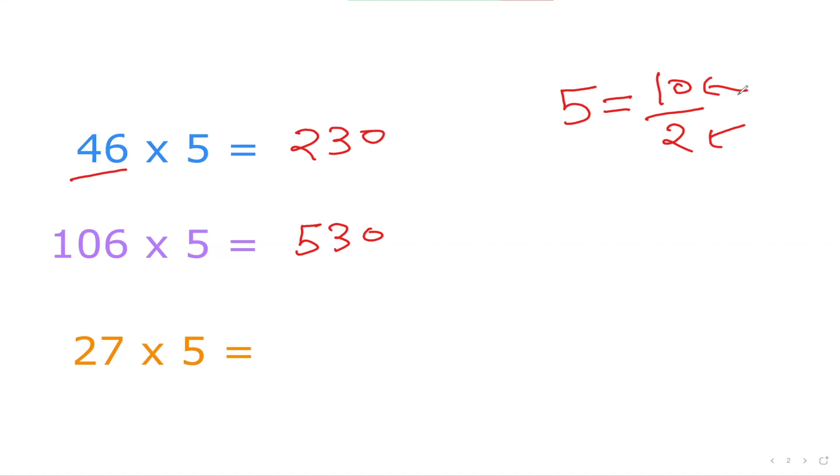There can be some little bit tricky questions which we could understand as well, like 27 times 5. Here what we can see is 27 we can't divide exactly by 2. Then we got to think about what is the number below 27 which I can exactly divide by 2. So I can take 26. If I take 26 then I can divide by 2. So 26 divided by 2 is 13.